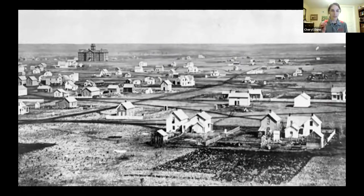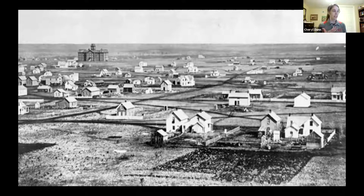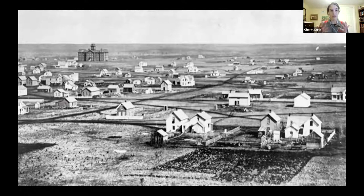Before moving into the tallgrass prairie, note where Lincoln and the University of Nebraska sit. This 1872 photo shows a noticeably treeless prairie — when settlers first arrived, there were no trees. Nebraska became the Arbor State and planted many trees. Even though the grasslands were shaped by climate, that climate can still support woody vegetation, and that's where we see the loss of our prairies.